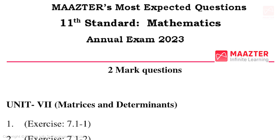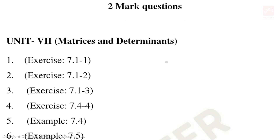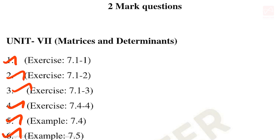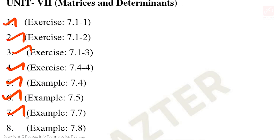Important 2-mark questions. Unit 7: Matrices and Determinants. Exercise 7.1 first, second, and third sum; Exercise 7.4 sum. Then examples 7.4, 7.5, 7.7, and 7.8.